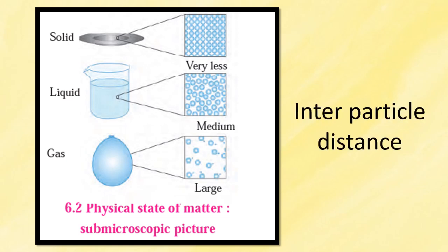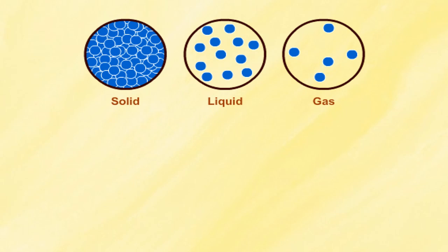This diagram shows the interparticle distance. In the square box, you can see the particle distances. This is another representation of the particles in solid, liquid and gases. In solids, the particles are very close to each other. In liquids, they are a little far from each other. Whereas in gases, they are very, very far from each other.